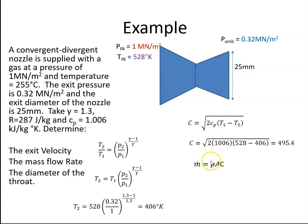Well, density is equal to the pressure over RT. So the pressure, when I convert it to newtons per meter squared, is 320,000 newtons per meter squared. R is 287, the temperature is 406 degrees Kelvin. That gives me a density of 2.75 kilograms per meter cubed.